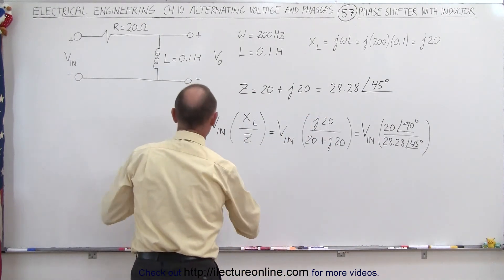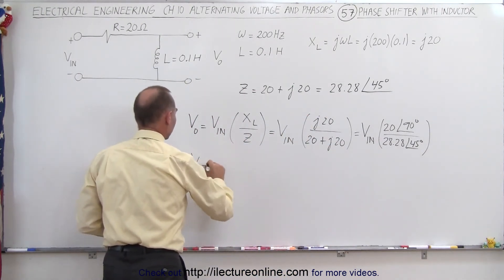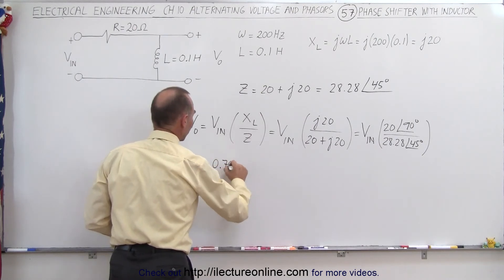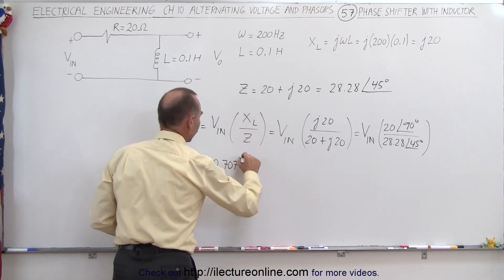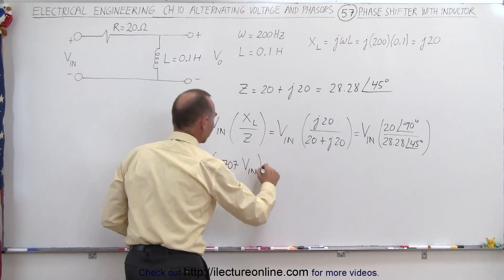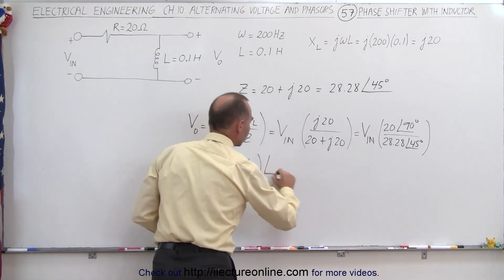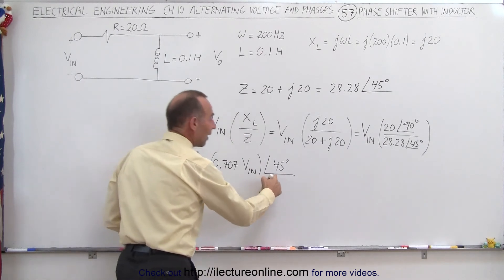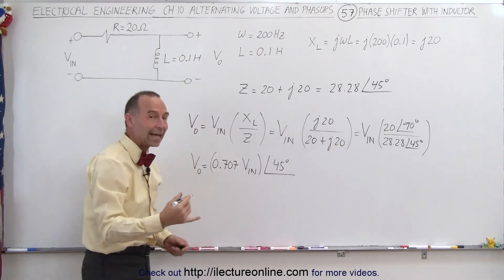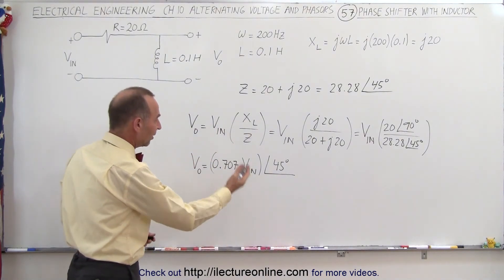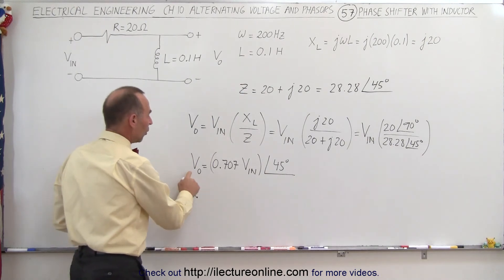So we see that the output voltage is equal to 0.707 times the input voltage, with an angle of 90 minus 45, or 45 degrees. You can see that this now has a leading angle, so you have a phase shift in the positive direction instead of a phase shift in the negative direction.